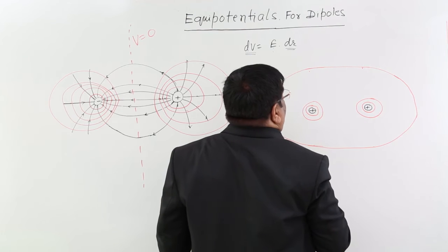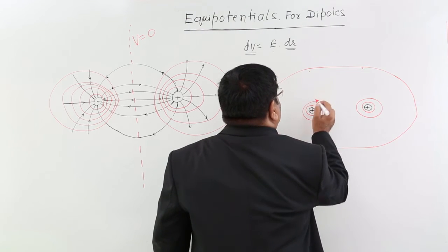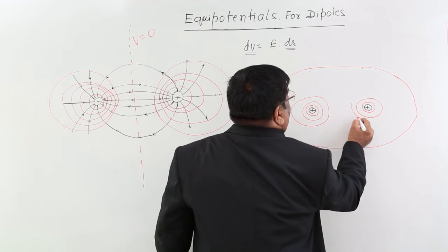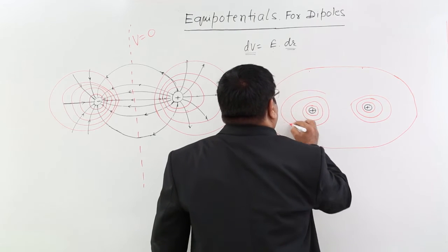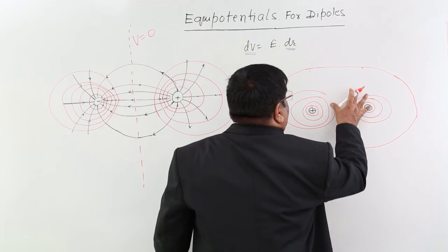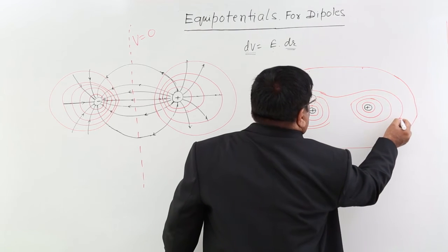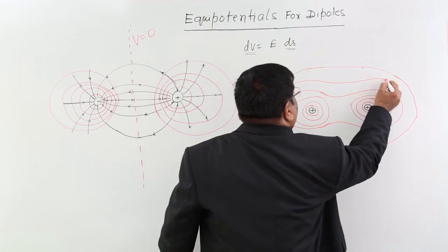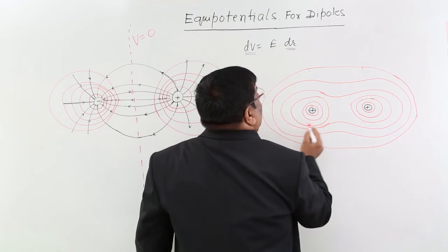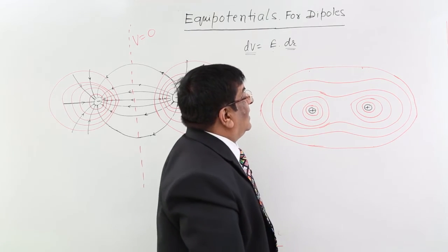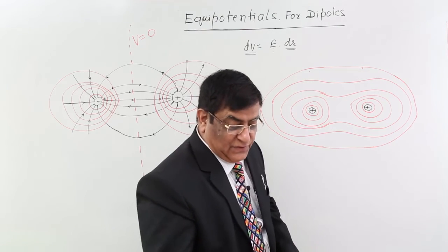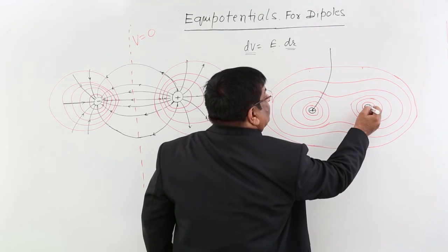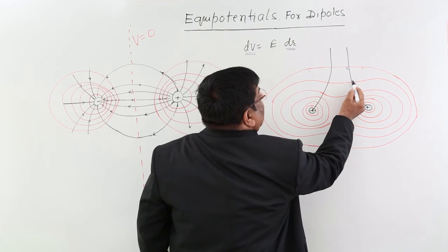There is a repulsion between the two charges, so the equipotentials will be shaped this way and this way, and then like this, and after that like this. How could we get it? The answer is: first we draw the electric field lines. See everywhere the angle is 90 degrees.